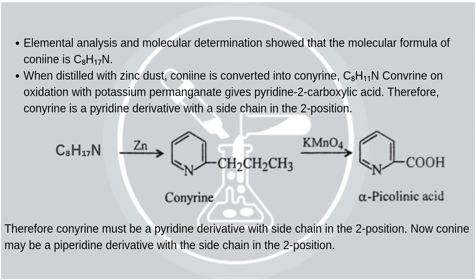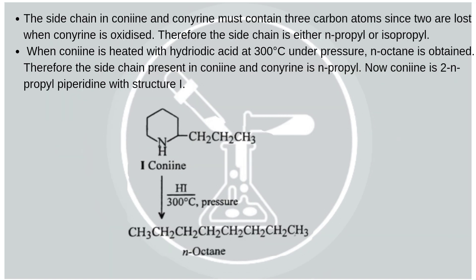If conorine is a pyridine derivative, conine may be a piperidine derivative. We saw that 2 carbon atoms are lost when conorine is oxidized, so we assume that the side chain in conine and conorine must contain 3 carbon atoms. There are 2 possibilities: the side chain is either n-propyl or isopropyl. When conine is heated with hydriotic acid at 300 degrees Celsius under pressure, an octane is obtained. Therefore, the side chain present in conine and conorine is n-propyl.